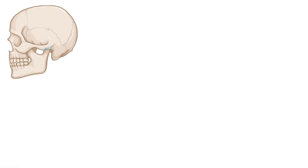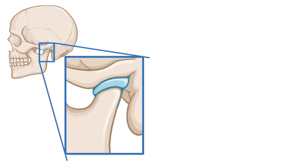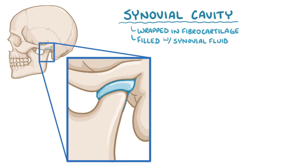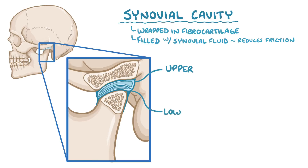Normally between the temporal bone and the mandible is a synovial cavity, which is wrapped in fibrocartilage and filled with synovial fluid, which is a protein-rich fluid that reduces friction between the sliding bones. The synovial cavity is divided into an upper and lower compartment by an articular disc within the synovial fluid.